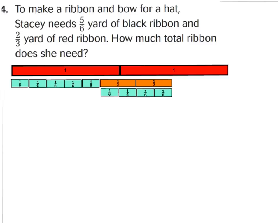For question 14 at the bottom of the page: to make a ribbon and bow for a hat, Stacy needs 5/6 of a yard of black ribbon and 2/3 of a yard of red ribbon. How much total ribbon does she need? The word 'total' means we're adding them together. I went ahead and laid out 5/6 — 1, 2, 3, 4, 5/6ths — and 2/3 side by side. As I put a 1 whole above it, it did go beyond 1 whole, so I put down 2 wholes because it will be a mixed number — greater than 1 whole but less than 2.